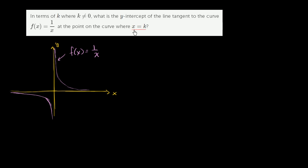We are concerning ourselves with the point x equals k. It could be anything that's non-zero. Let's say this is k right over here — so that is the point k, 1 over k. We want to find the line tangent to the curve there, which might look something like this. We need to figure out its y-intercept — where does it intercept the y-axis? So we need to figure out this point right over here.